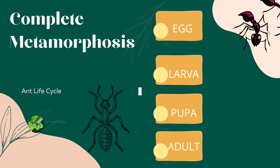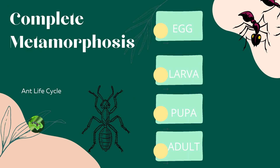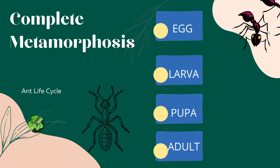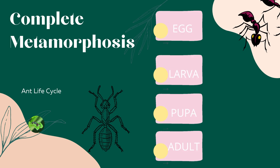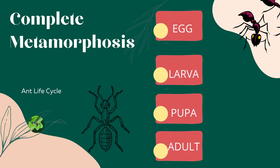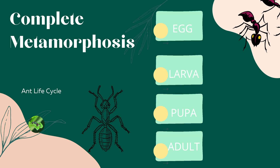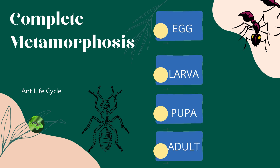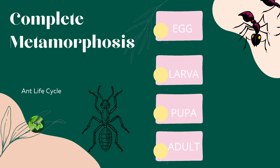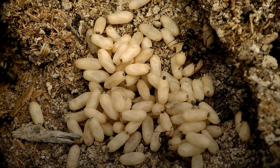Ants undergo a complete metamorphosis, meaning they go through four distinct stages, which include egg, larva, pupa, and adult. Continue watching this video to understand what goes on in each stage.